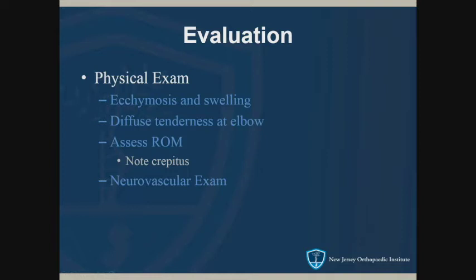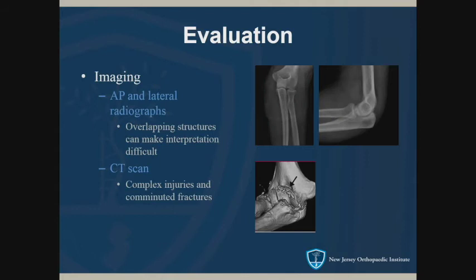On exam there will be swelling and bruising. It's usually more difficult to assess an isolated coronoid fracture on physical exam than a radial head or olecranon fracture, because it's deep and under the muscle. You may notice crepitus on range of motion. Perform a neurovascular exam as with all these injuries. On AP and lateral x-rays, coronoid fractures can be tough to pick out — especially on the AP — unless it's a large piece or involves the medial facet. You usually have to look at the lateral; on this view you can see a minimally displaced coronoid tip fracture.